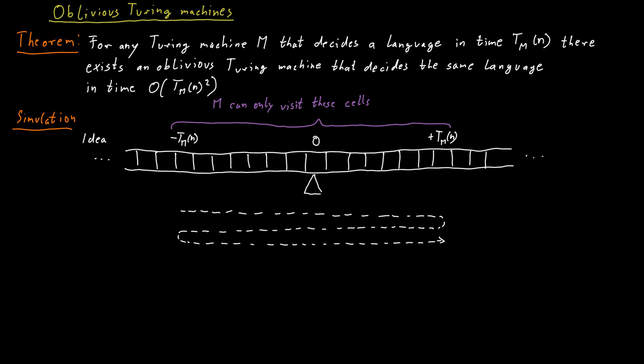In order to still be able to perform the computation, the Turing machine will place markers, extra markers in certain cell positions. Specifically, the Turing machine will mark the position at which the head really should be. So our oblivious Turing machine will mark the position at which the Turing machine M currently has its head. And when we pass from, say, left to right over the tape, at some point we will encounter the cell of the tape that contains the marker. And that means we now happen to be in the correct position.